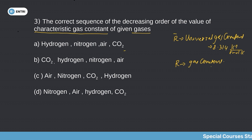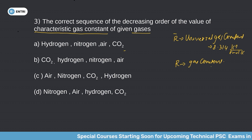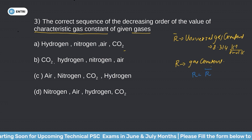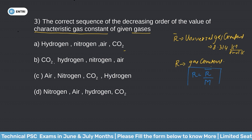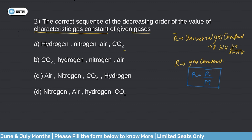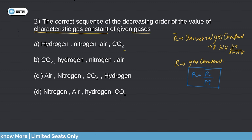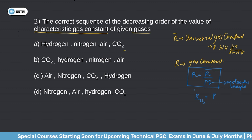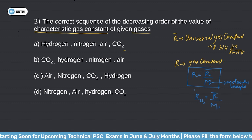The universal gas constant R-bar is fixed at 8.314 kJ per kmol per K. The key relation is: R equals R-bar divided by M, where M is the molecular weight of the gas. So the characteristic gas constant R equals the universal gas constant R-bar divided by the molecular weight of that particular gas.